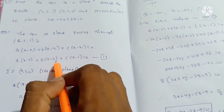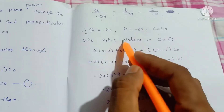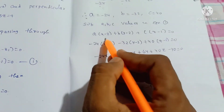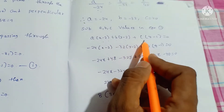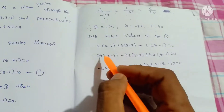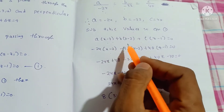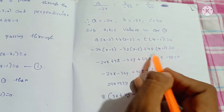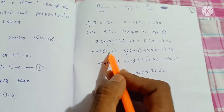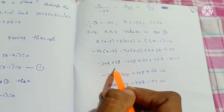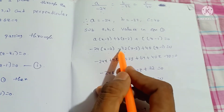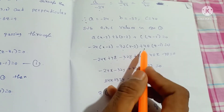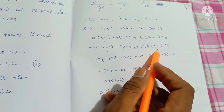We substitute the values a equals minus 24, b equals minus 32, c equals 40 into equation 1. So: minus 24(x minus 2) plus minus 32(y minus 2) plus 40(z minus 1) equals 0. Expanding: minus 24x plus 48 minus 32y plus 64 plus 40z minus 40 equals 0.